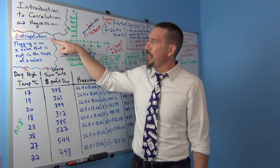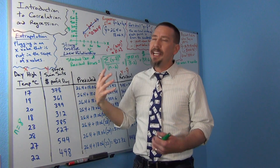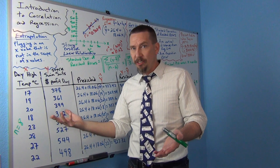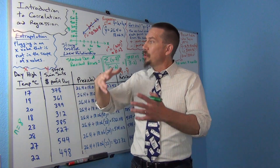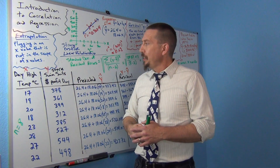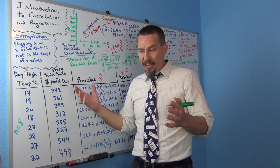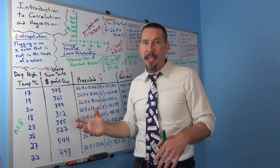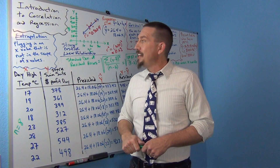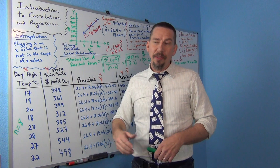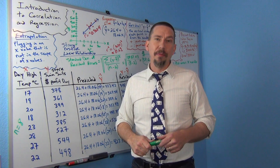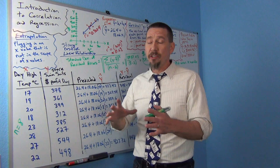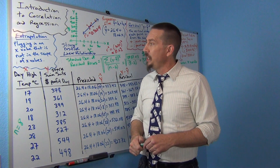Extrapolation is very famous. It's when you plug an x value into a formula that the formula was never designed to handle — you're plugging in a number that's out of the scope. It's very famous in stats, especially in the stock market. People want to know what's going to happen 20 years from now, so they plug in a number for 20 years from now to see what the stock price would be. But that's usually a huge extrapolation and it's not very accurate, because you're so far out of the scope of the data.